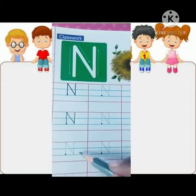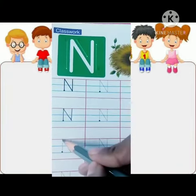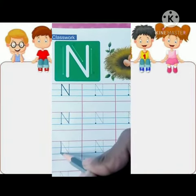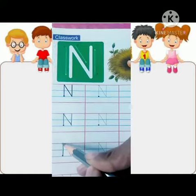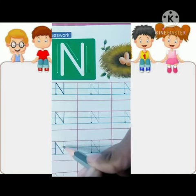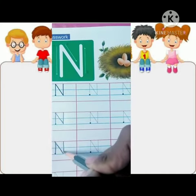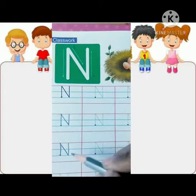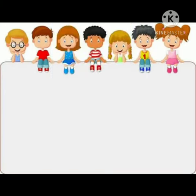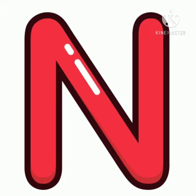Let's try it once again. Make an extending line from this red line. Then one slanting line. And one more standing line joining this slanting line. This is letter N. Now you know how to write letter N. Keep practicing at your home. Bye bye.